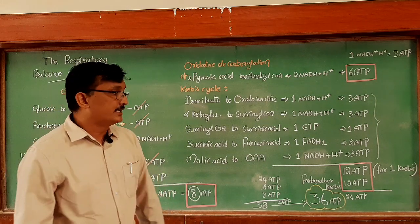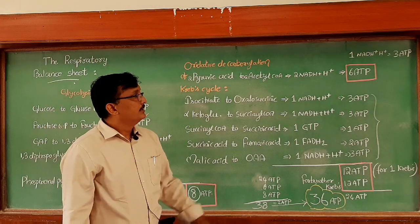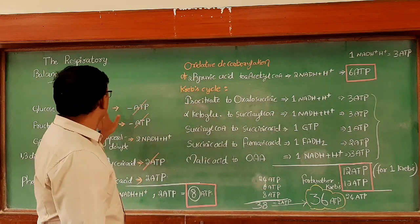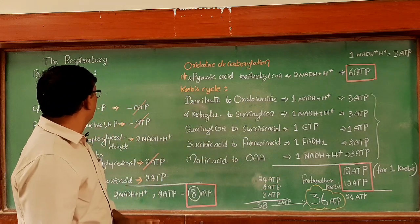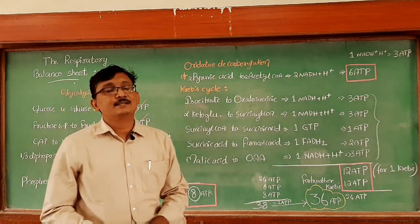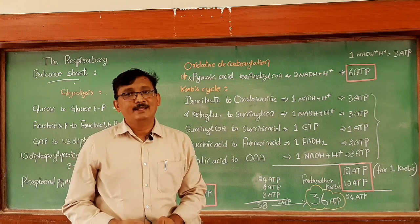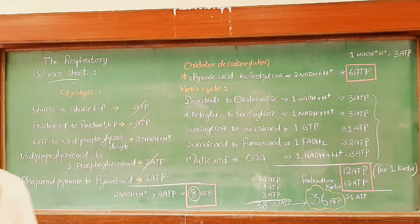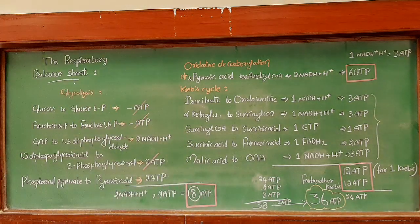So the final answer is 36 ATP molecules are formed whenever a glucose molecule undergoes complete oxidation — not 38. This is the topic of the respiratory balance sheet. Thank you so much.